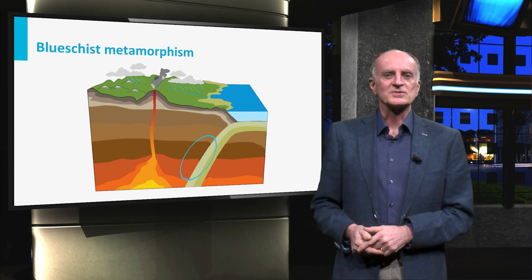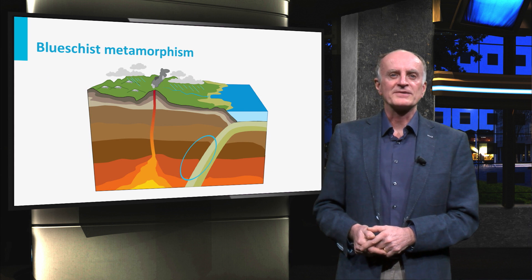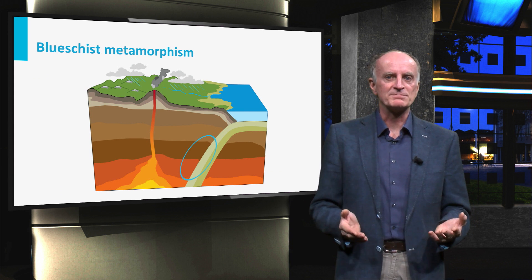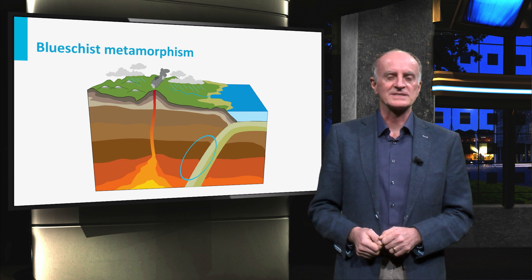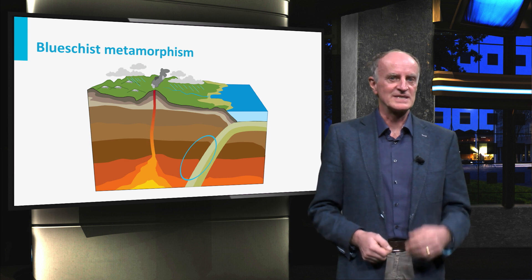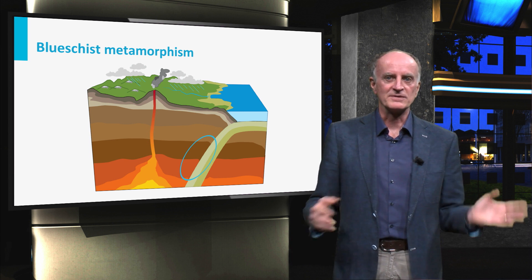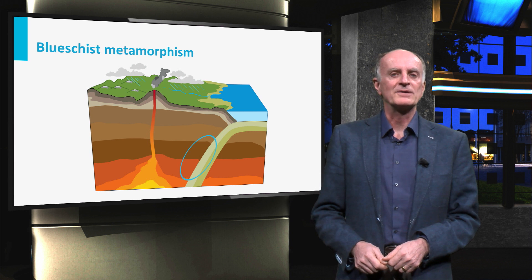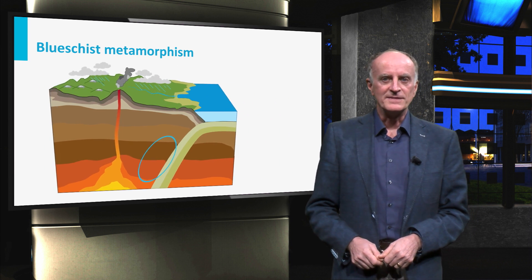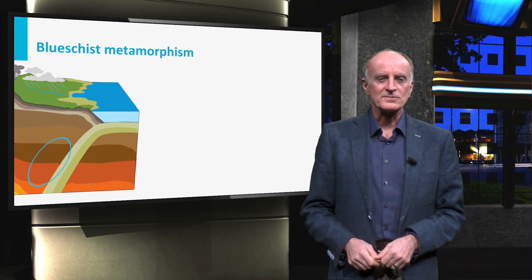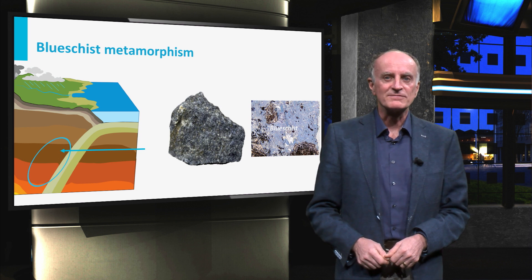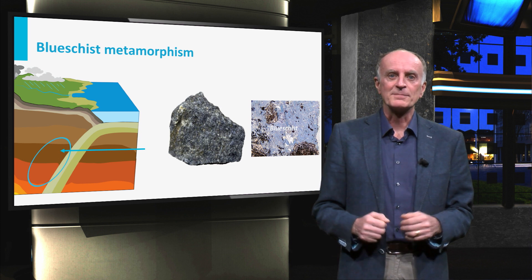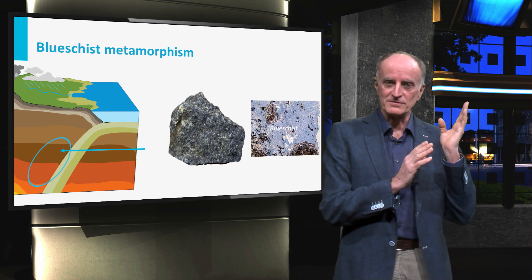Gradients in subduction zones are characterized by much higher pressures, and result in very special rocks: blue schists. Famous examples are found in the Alps, in Japan, and in many other mountain belts. In these settings, rocks reach depths of several tens of kilometers and then, even more strangely, are brought back to the surface.